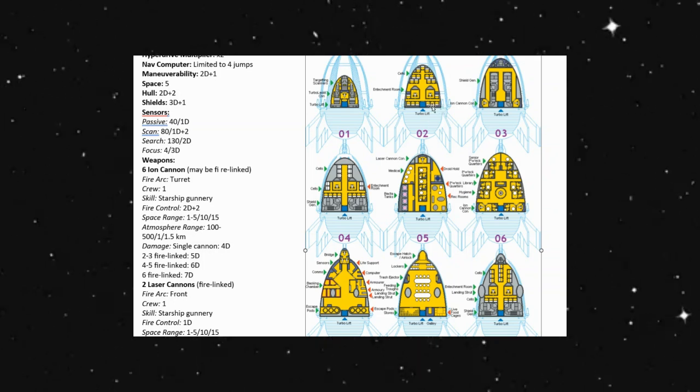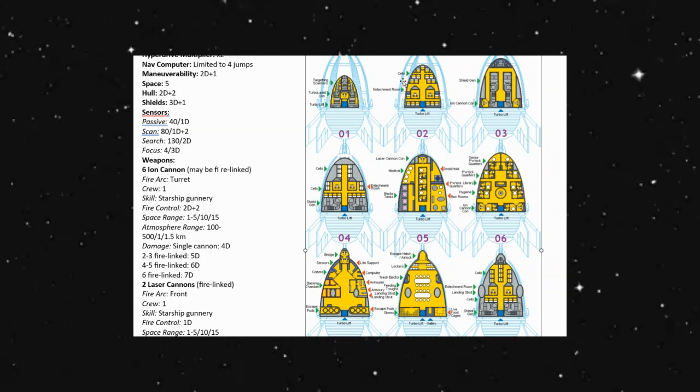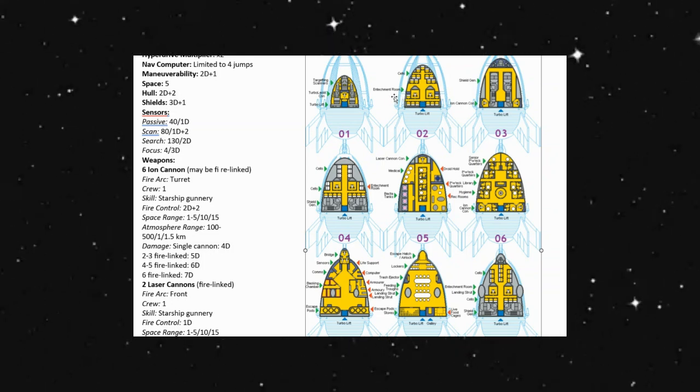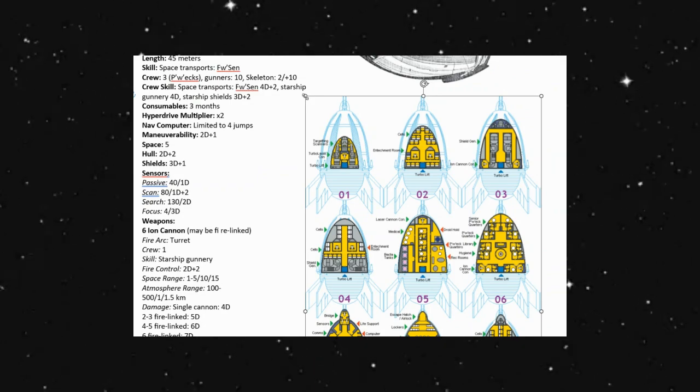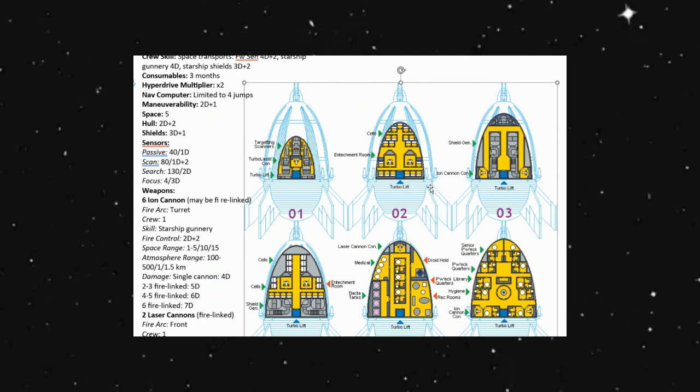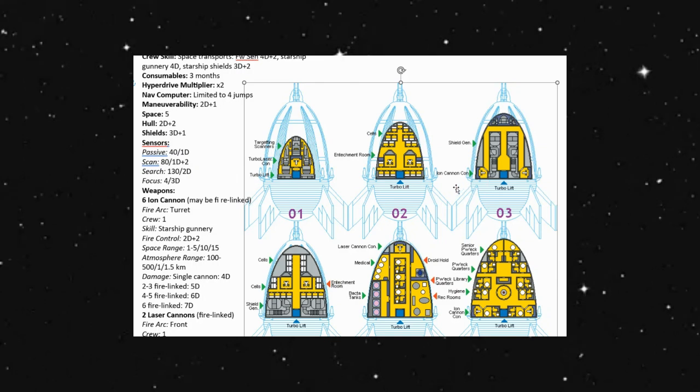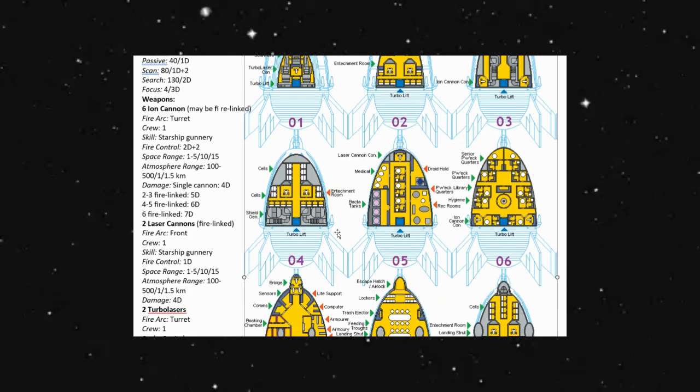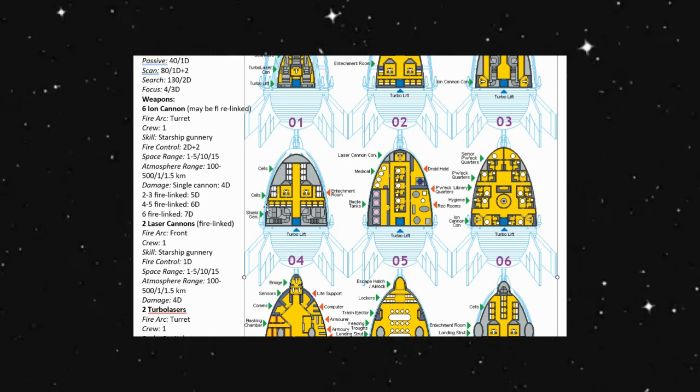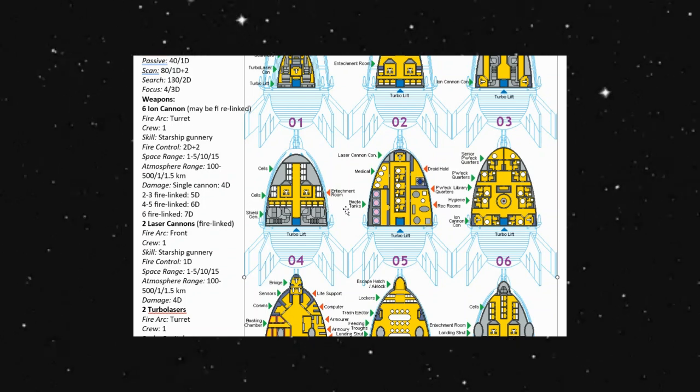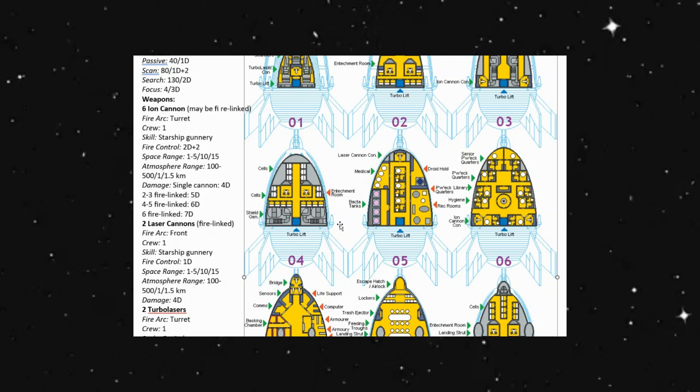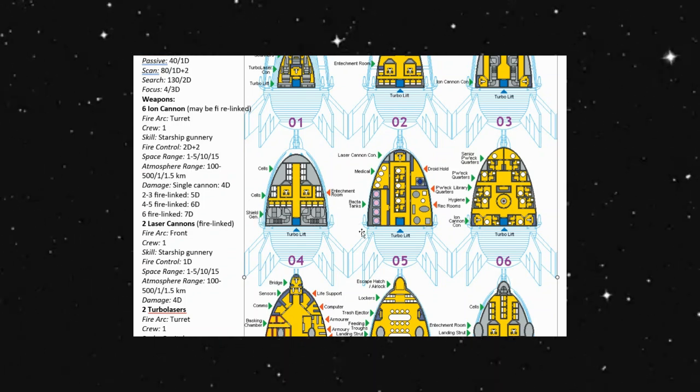In our second level, we have different cells. I'm having a hard time trying to read this here. Let me blow this up a little bit so I can see it. Cells. So, I'm going to guess that this is for our batteries or whatever. Entechment room, whatever that refers to. And our third one, we have our shield generator and our ion cannon. Or some of our ion cannons. We have more cells for probably capturing people. Level four, level five. We have our laser cannon in the front.